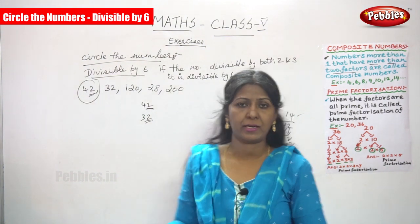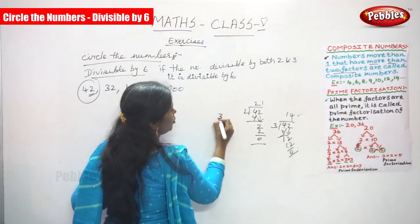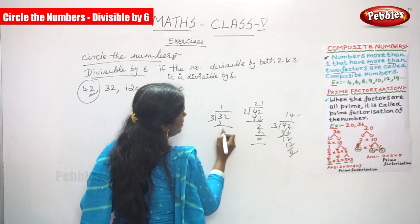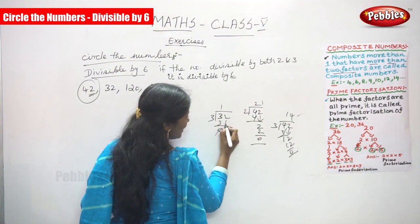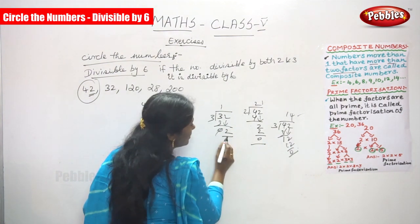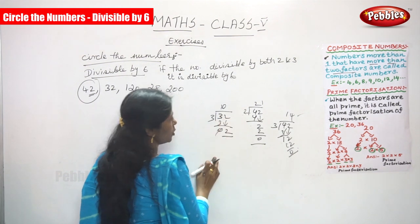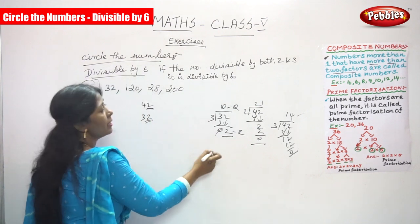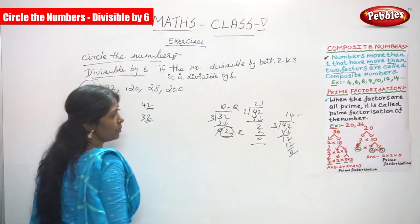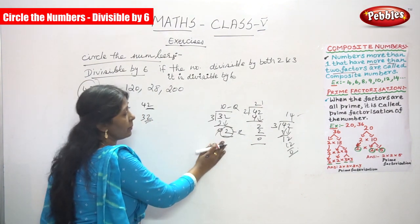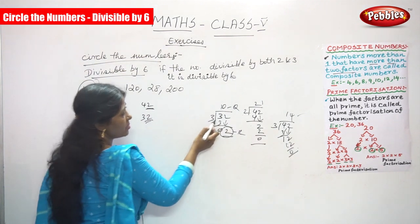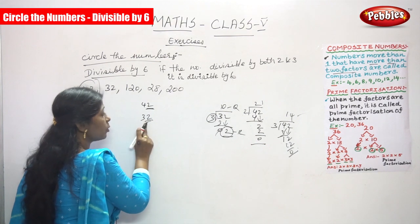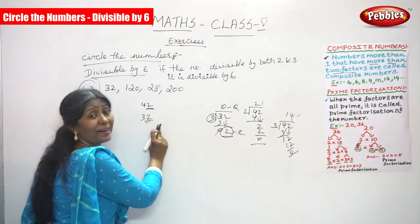To verify: 32 divided by 3 — 1 × 3 = 3, 3 minus 3 = 0, bring down 2. We can't divide 2 by 3, so put 0. Quotient is 10 and remainder is 2. Since the remainder is not 0, 32 is not divisible by 3.